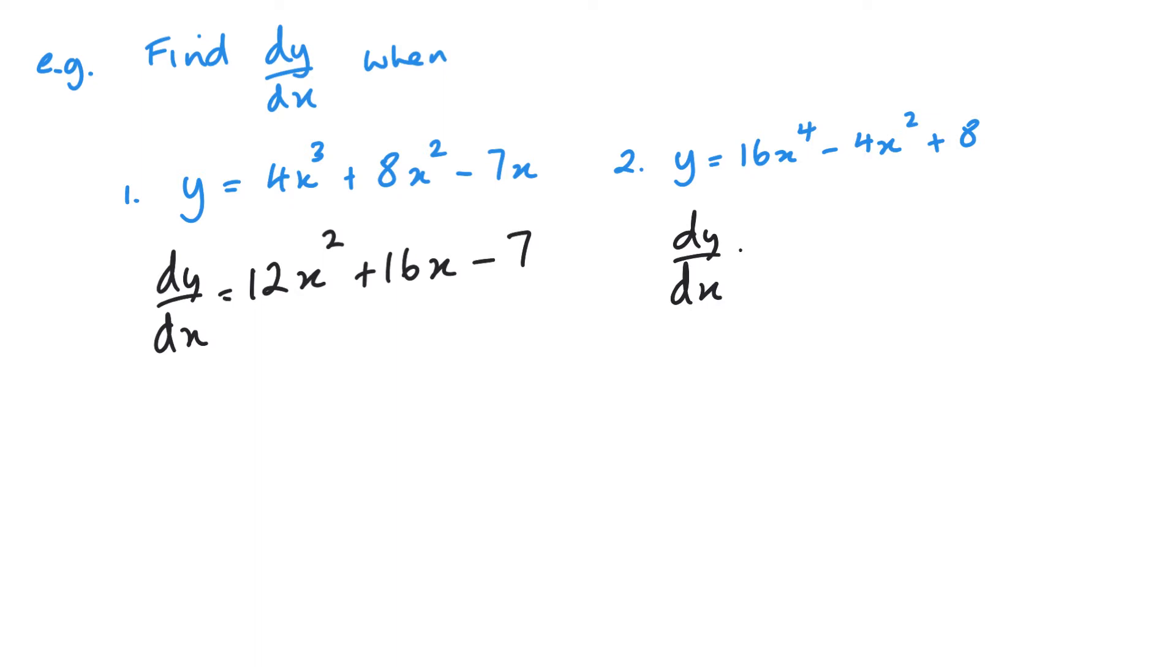Now, have a look at question 2. Again, same thing. Multiply by my power and take 1 away from my power. So 4 16s are 64x cubed. Multiply by my power and take 1 away from my power. So minus 8x to the power 1. And my constant here will become 0.